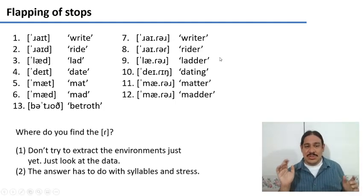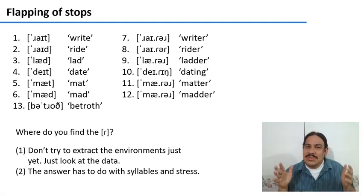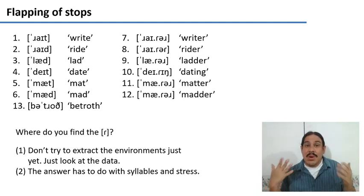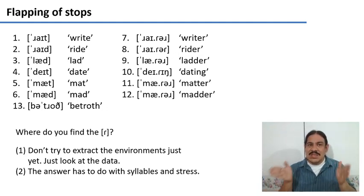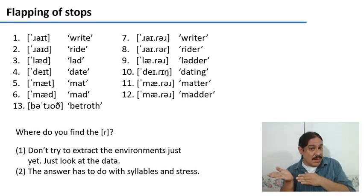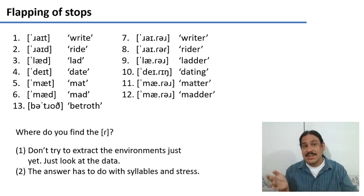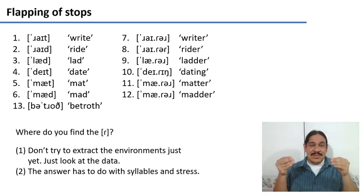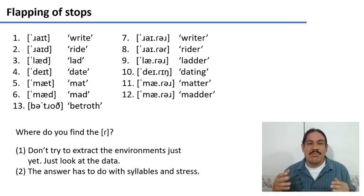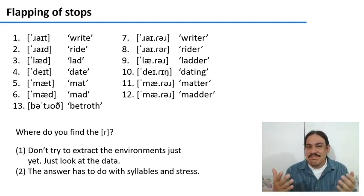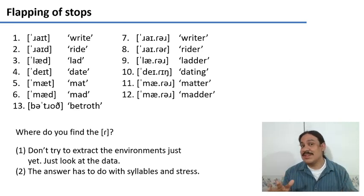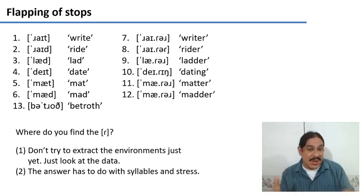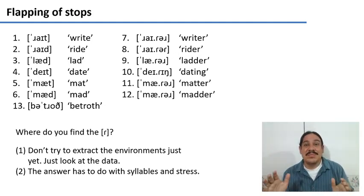The first thing I want you to do is not extract the environments just yet — just look at the data and try to generate some preliminary hypotheses for why sometimes you see a T and sometimes you see the tap. By the way, spoiler alert: these are two allophones of the same phoneme T. I want you to think about when we see the tap. It has to do with syllables and stress. Please pause the video.